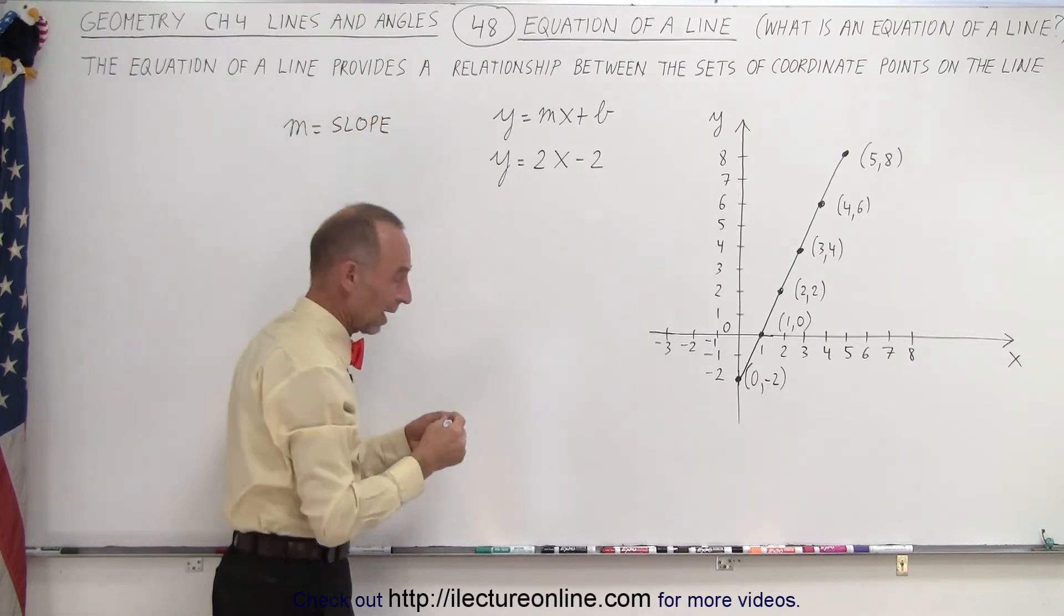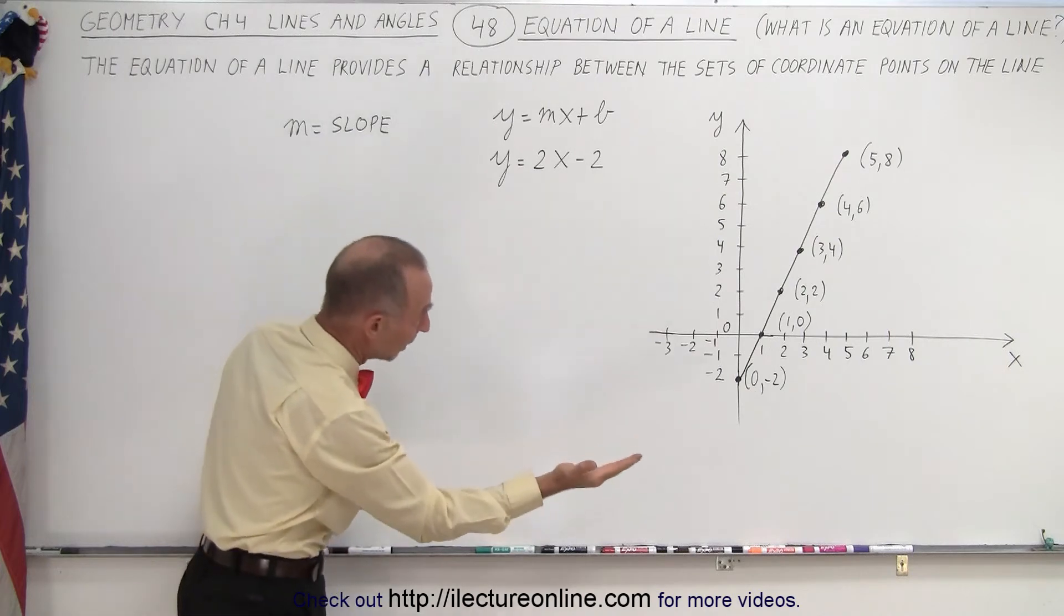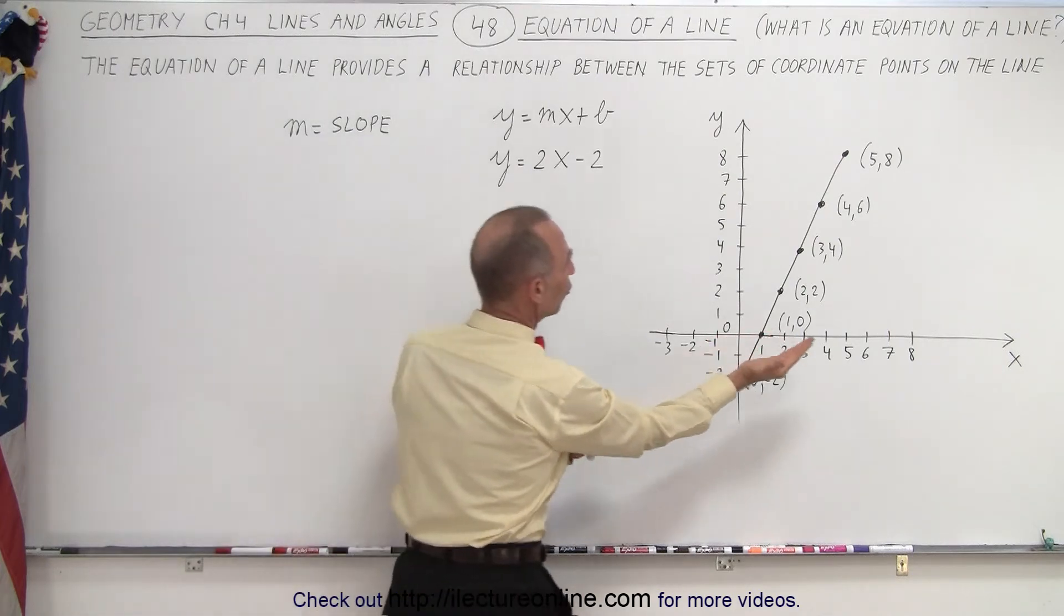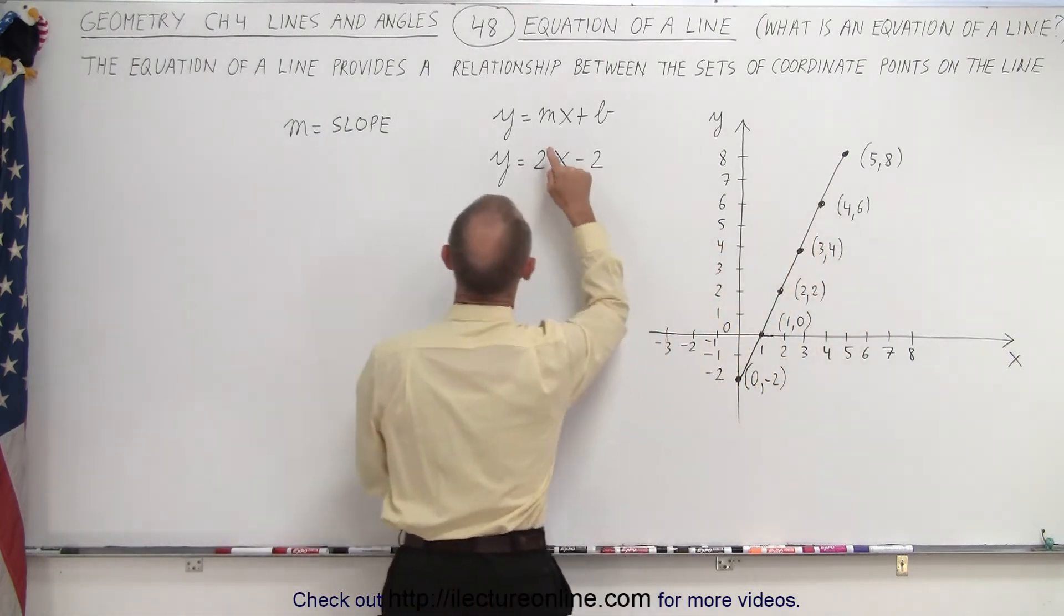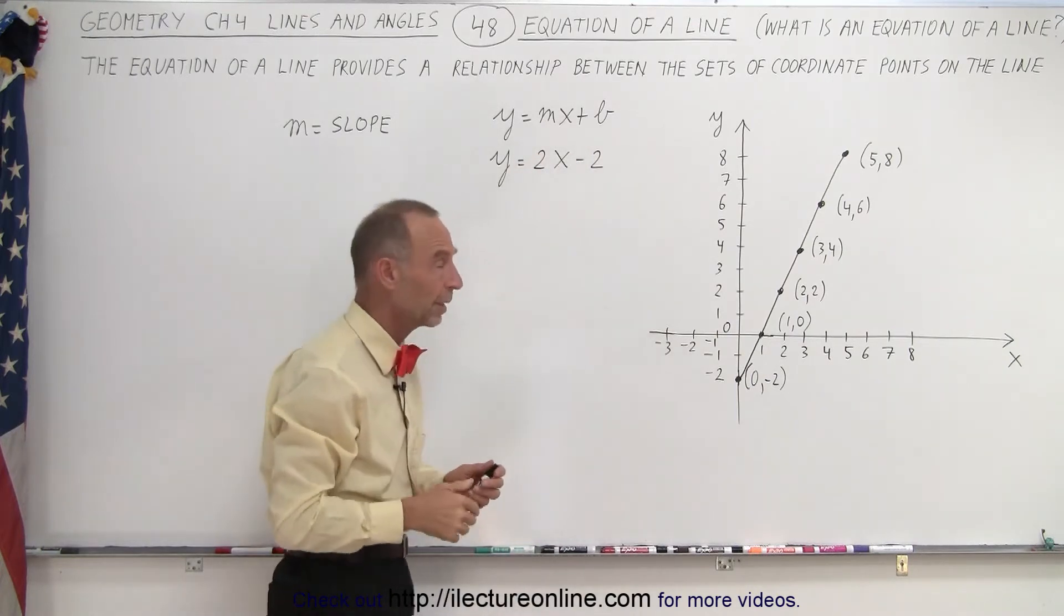In other words, the steepness of the line. The bigger the slope, the steeper the line. The smaller the slope, the less steep the line. So here the slope is relatively steep. And so we can see that m equals 2, the slope equals 2. We'll show in a moment what that means.